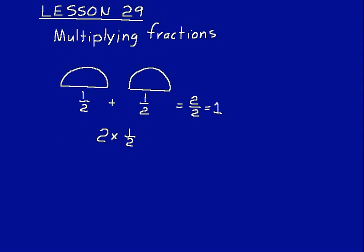Now if you have a whole number like a two, you can just write it as two over one. Any whole number you can change to a fraction by just putting a one in the denominator. So now we can do the numerator: two times one is two, over one times two is two. We get the same thing as when we added it, which of course is what we would expect. Adding half twice is the same thing as multiplying half by two.